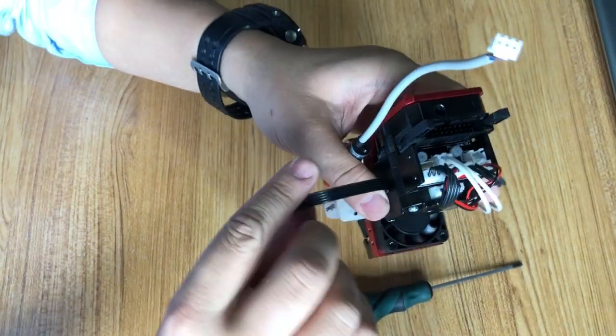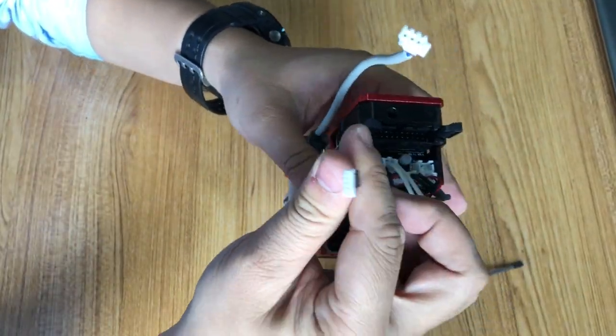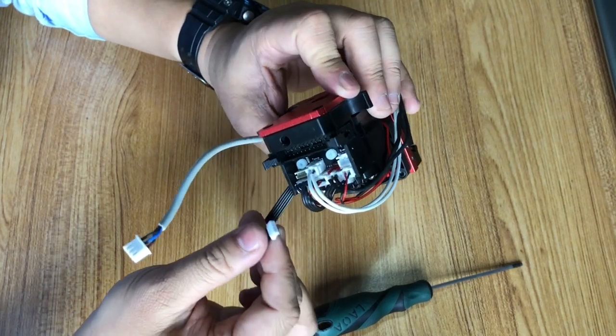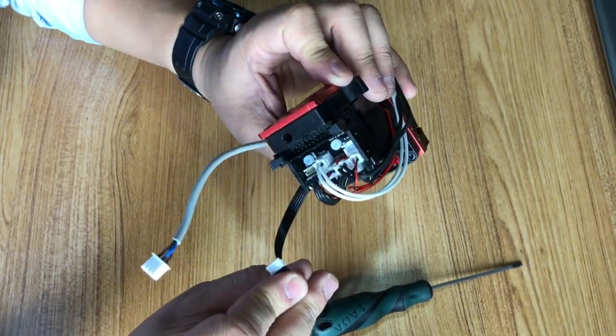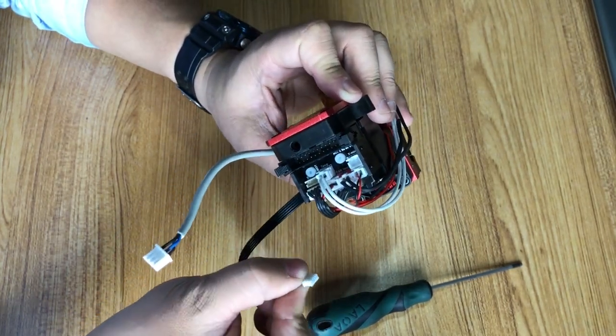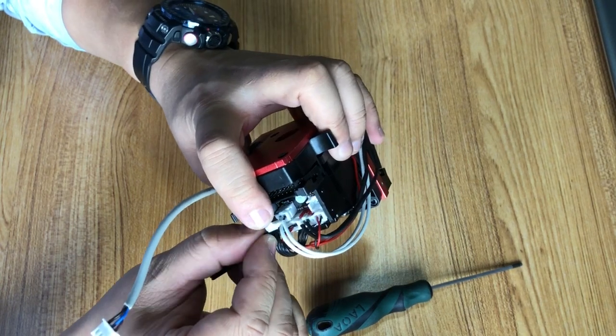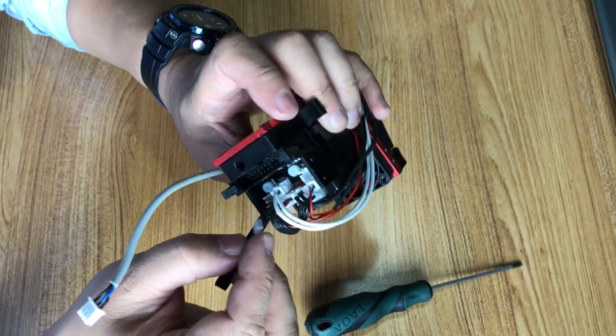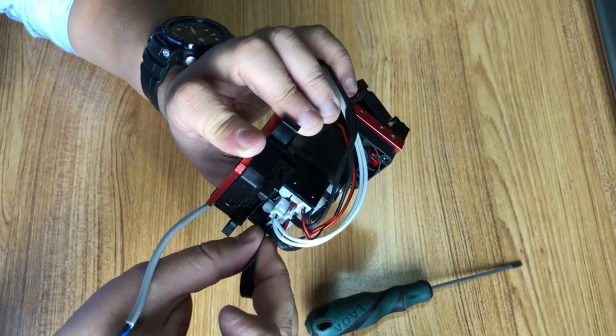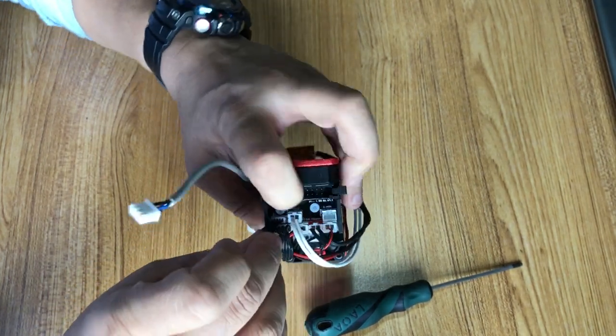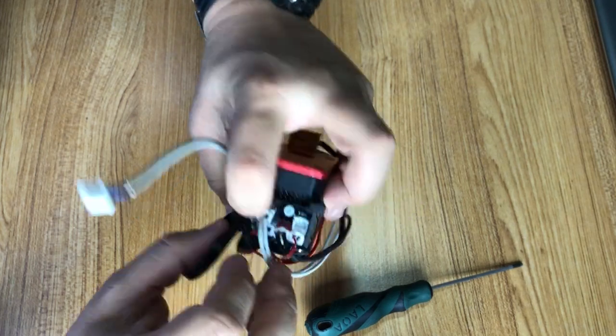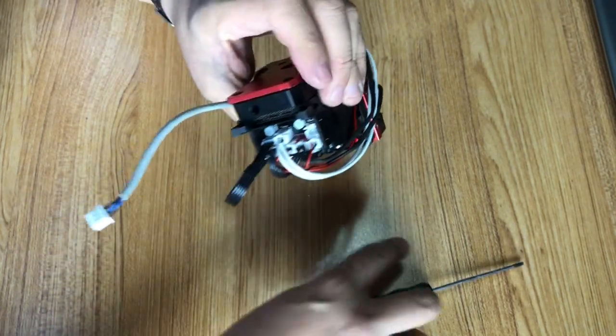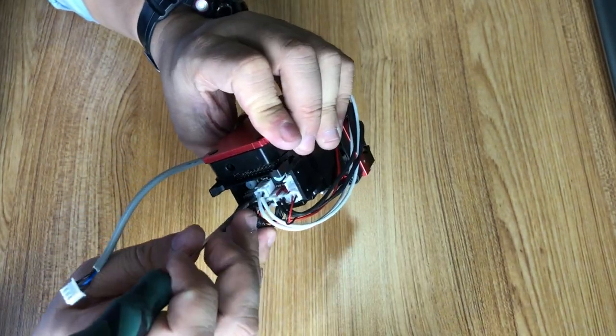Insert the BLTouch cable into the split board. Make sure you put it in the correct direction. On the side there is a raised area so you can match it to the socket. If not, you cannot insert it. You may use a hex wrench to help.